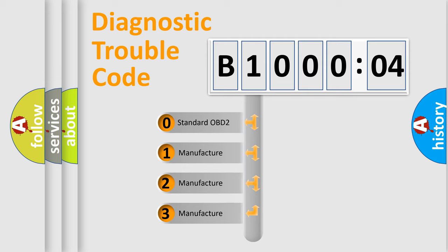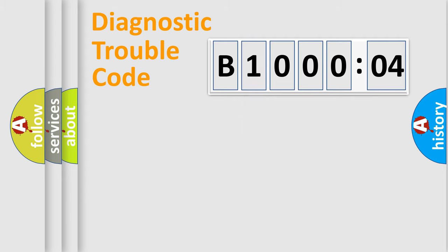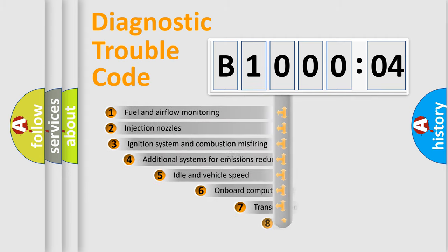If the second character is expressed as zero, it is a standardized error. In the case of numbers 1, 2, 3, it is a manufacturer-specific expression of the car-specific error.